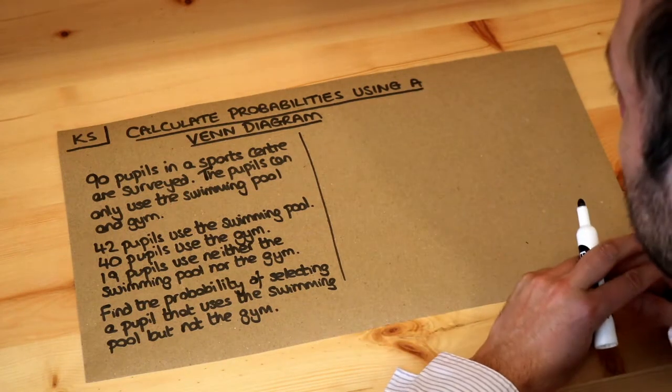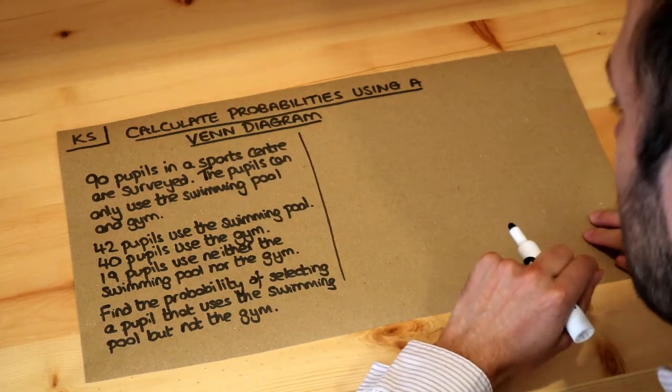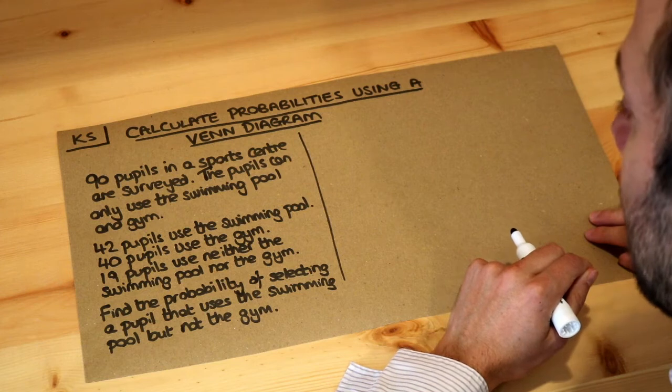Now we're going to combine skills that we've already done in previous videos. We're going to use our knowledge of Venn diagrams and our knowledge of probability and combine them together.